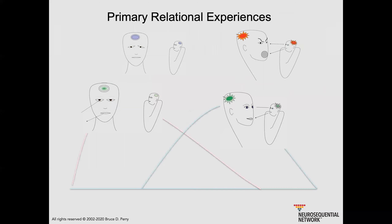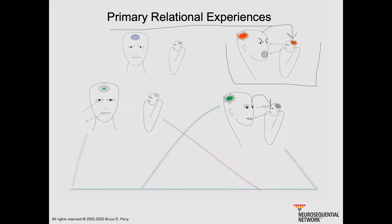The truth is, everybody has an array of primary relational experiences. Early in life, when you're first born, you start to build a catalog of experience based upon the nature of these interactions you have. You may have some interactions where somebody is hostile and threatening — dysregulating rather than regulating. And then you may have moments where somebody looks you in the eyes, rocks you, speaks with a tender voice, and you feel like you're the center of the universe — you feel love.